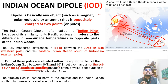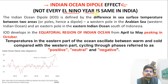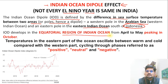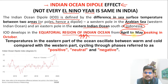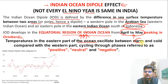Now let's understand how this mechanism operates. The Indian Ocean Dipole develops in the equatorial region of the Indian Ocean, which receives maximum solar insolation. It starts developing during April to May and peaks by October, when heat accumulation drives warming and cooling cycles. Temperatures in the eastern part of the ocean oscillate between warm and cold compared with the western part, cycling through positive, neutral, and negative phases.